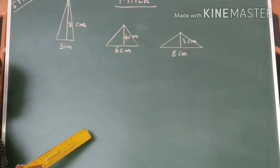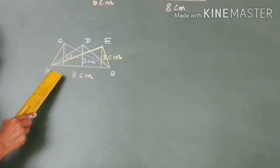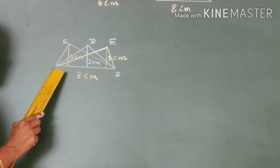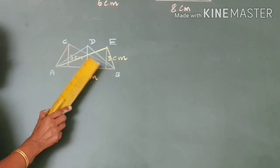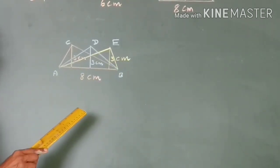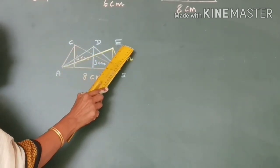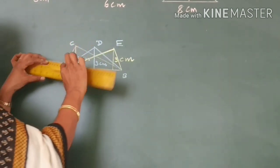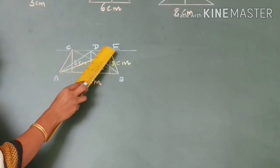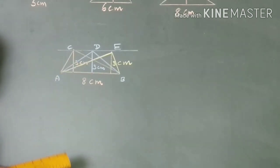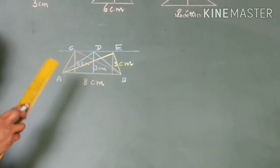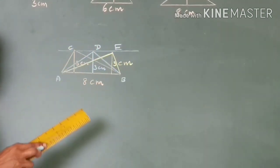Now look at this figure: triangle ACD with base 8 and height 3, and another triangle with the same base and same height. You can see that the third vertices C, D, and E are on the same line. From this, we understand: all triangles with the same base and area have their third vertex on a line parallel to the base.